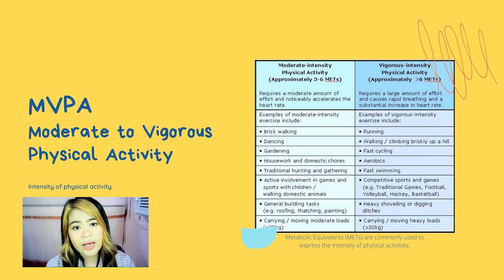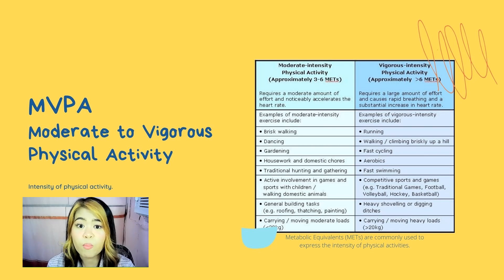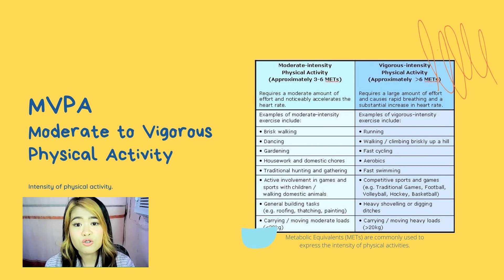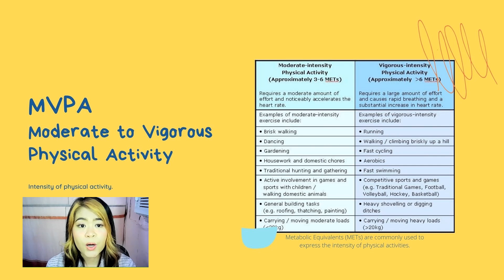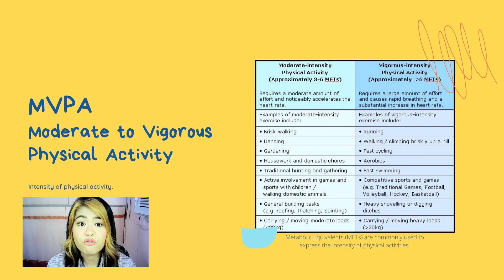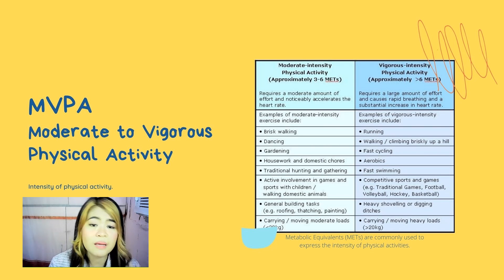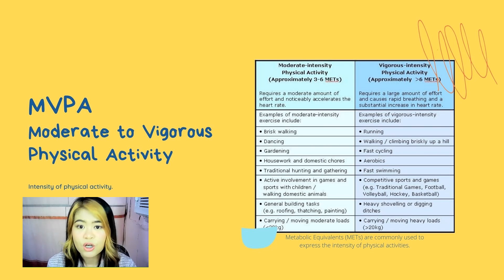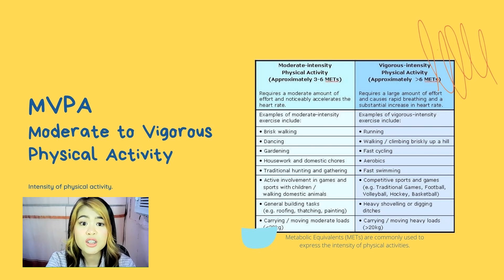For example, if your weight is 160 pounds — that is 72.5 kilograms — you consume about 254 milliliters of oxygen per minute while you're at rest. How is that calculated? 72.5 kilograms, which is your weight, times 3.5 milliliters, equals 254 milliliters of oxygen per minute while you are at rest.